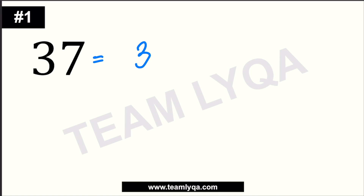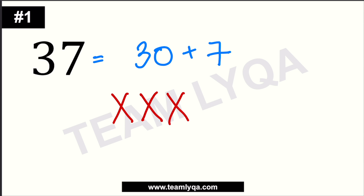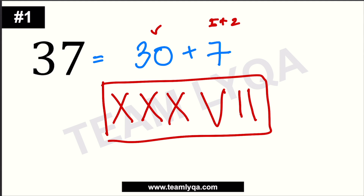Here's the first one: 37 is 30 plus 7. For 30, we can write it as three X's — XXX is fine since it's not four. That covers 30. Then for 7: 7 is 5 plus 2, so V plus two I's. So 37 is XXXVII. I hope you got this right — be careful about the count, it needs to be exact.